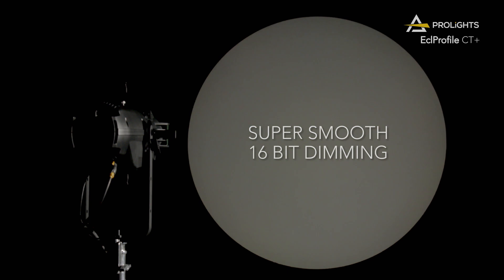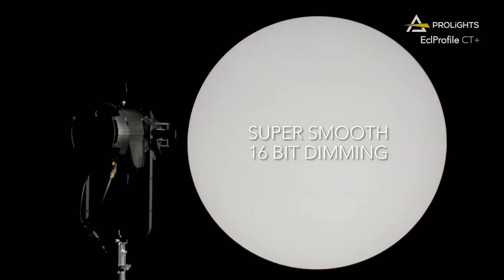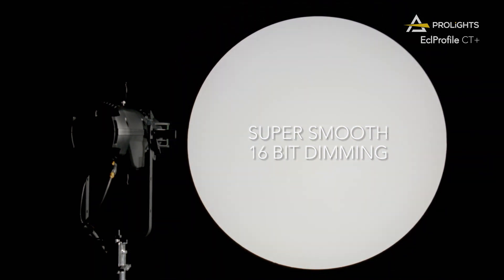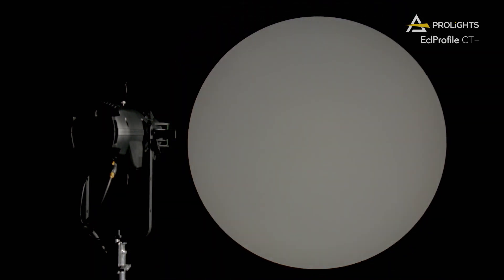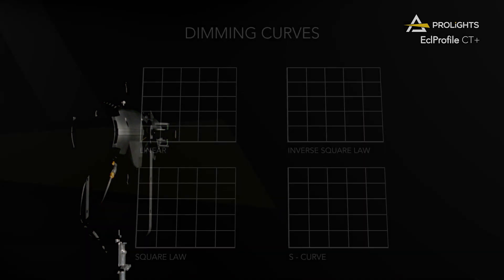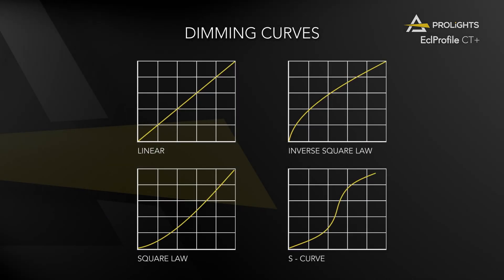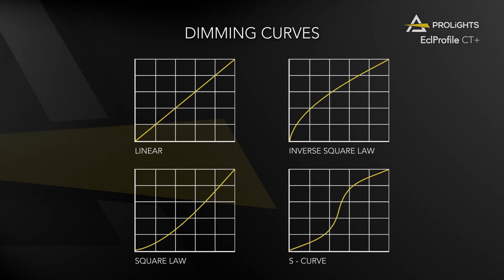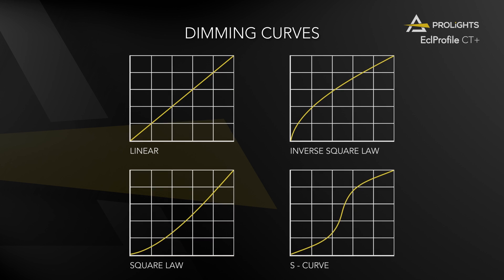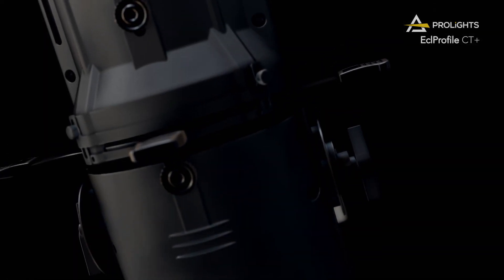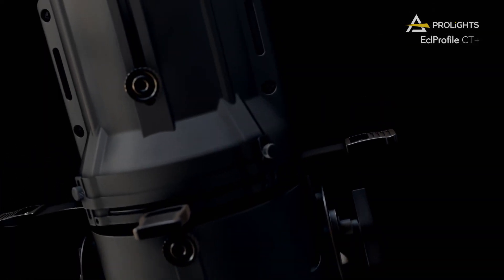ECL Profile CT Plus performs a beautiful 16-bit linear smooth dimmer from zero to full. Users can set through the user interface between four different dimmer curves and four selectable dimmer speeds to achieve any desired dimming behavior.